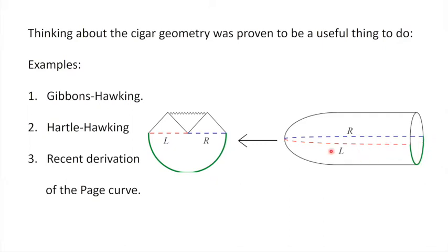The way this works is you slice the cigar in the middle. You see the left part and the right part, and then you analytically continue. You can study not only classical geometry this way, but also quantum effects. More recently this was also used to derive the Page curve using some extra Euclidean solutions.